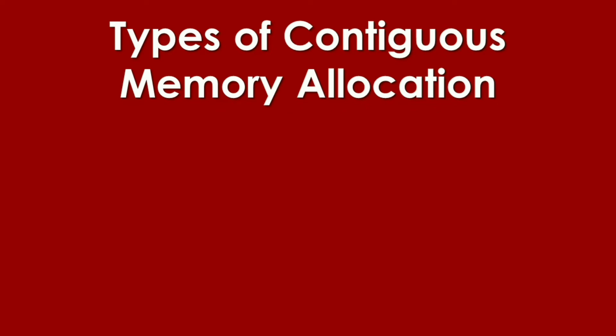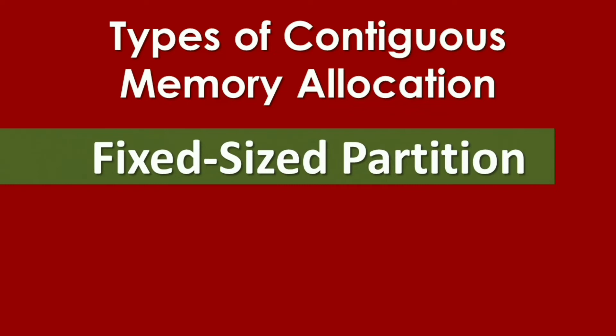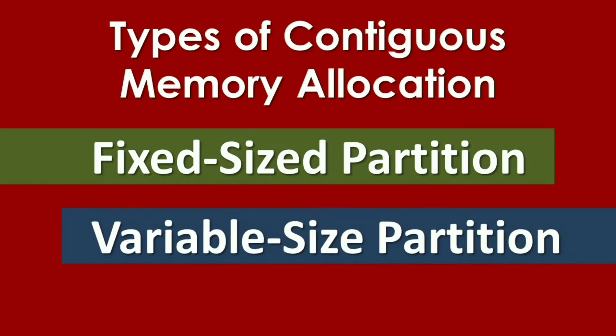We have two types of Contiguous Memory Allocation. We have Fixed Size Partition and Variable Size Partition. First, let's have the Fixed Size Partition.